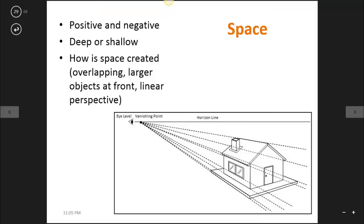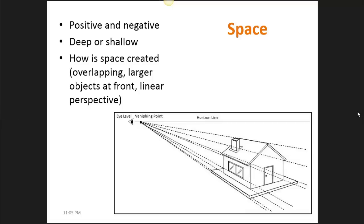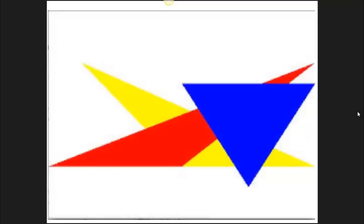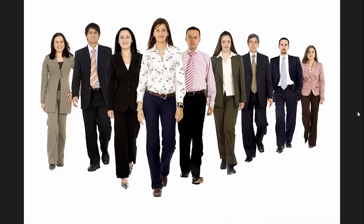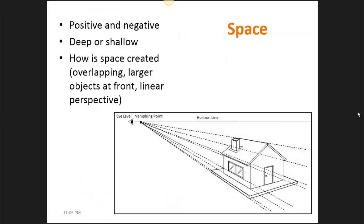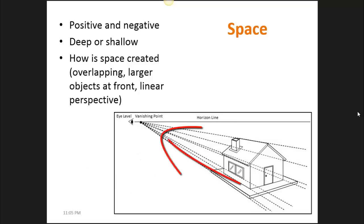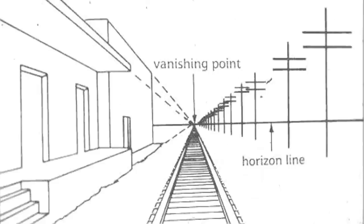The next element we're going to look at is space. What you could start thinking about is, is the space positive or negative? Is it a deep space or a shallow space? How is space created? How does the artist imply on a flat canvas that there is actually a sense of space? There are different ways that artists can do this. They can overlap images — obviously if one thing is in front of another, we know that there is a sense of space. Larger objects are put at the front, smaller objects near the back. And the use of linear perspective means that as things recede from us in space, they start to narrow towards a vanishing point, which suggests that there is a sense of space.